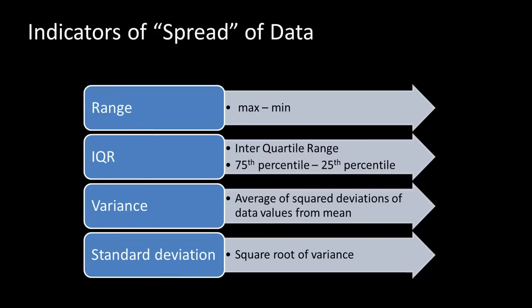There are several indicators that are used to look at the spread of data. One is the range, the most obvious, which is the maximum value minus the minimum value that indicates the overall range of the data.